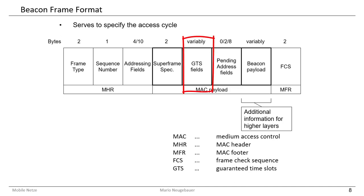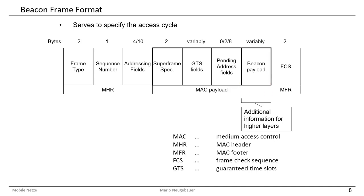Another important part of the beacon message is the GTS fields, which take care of guaranteed time slots. If you need guaranteed communication between reduced function devices and full function devices, you would assign such guaranteed time slots in this part of the MAC payload. Finally, there is the beacon payload, which contains information from the upper layers of the stack.